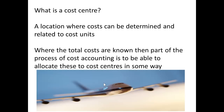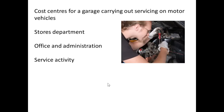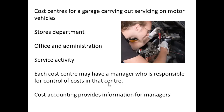What about a cost centre? This is an area where the costs can be determined and related — sometimes easy to do in a factory, not quite as easy in other situations. Where the total costs are known, part of the process of cost accounting is to allocate costs to cost centres. For example, a garage carrying out servicing on motor vehicles can allocate costs to the stores department, to office administration, and to service activities.